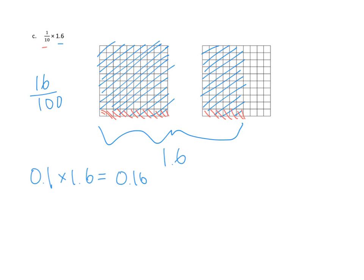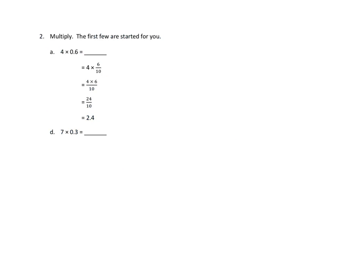And I think sixteen hundredths makes some sense here. One tenth of 1.6. In our old module one place value chart, we would have taken each of those values, the one and the six, and moved them one place value to the right. So the one would become a tenth, and the six tenths would become hundredths, and that's exactly what happened. The one became a tenth, and the six became a hundredth, and we ended up with sixteen hundredths, which is exactly what our model suggested we would have. Awesome. Excellent.